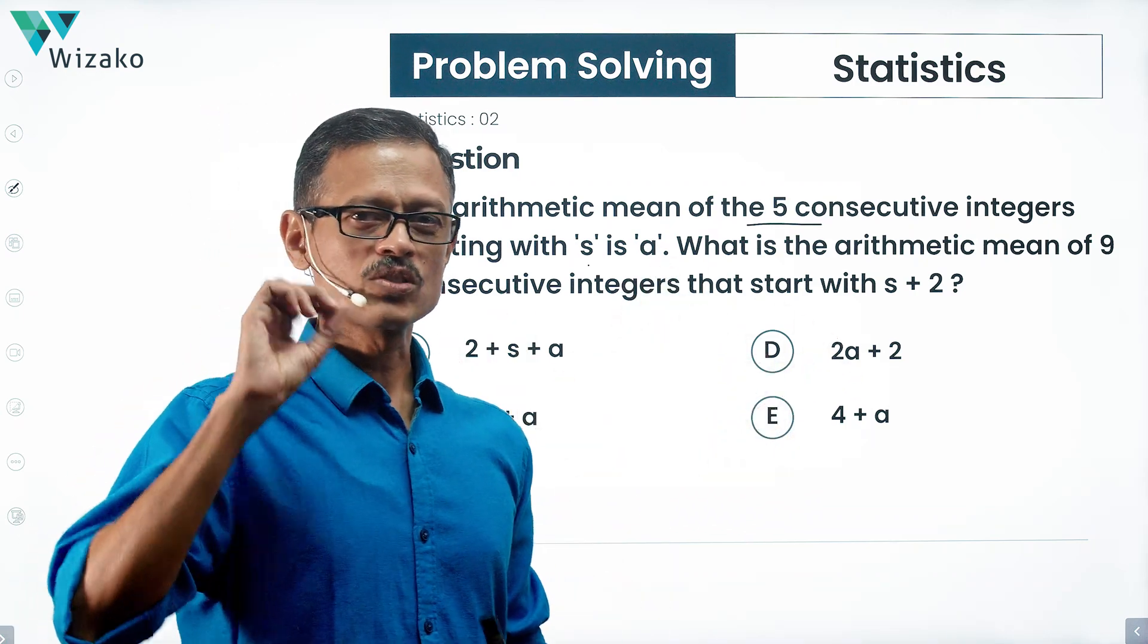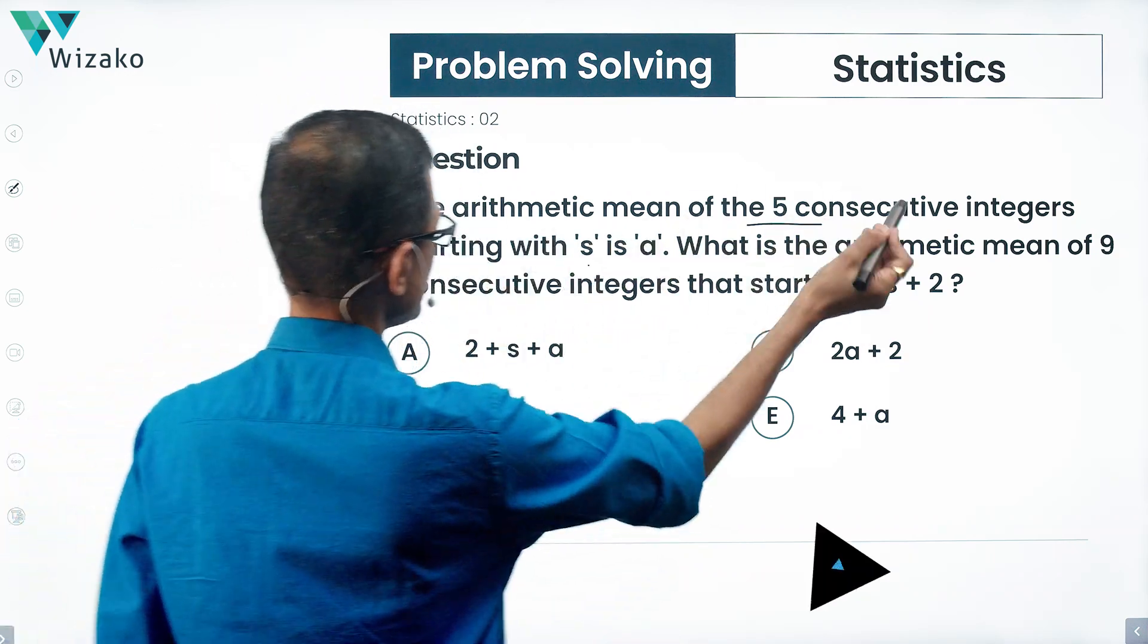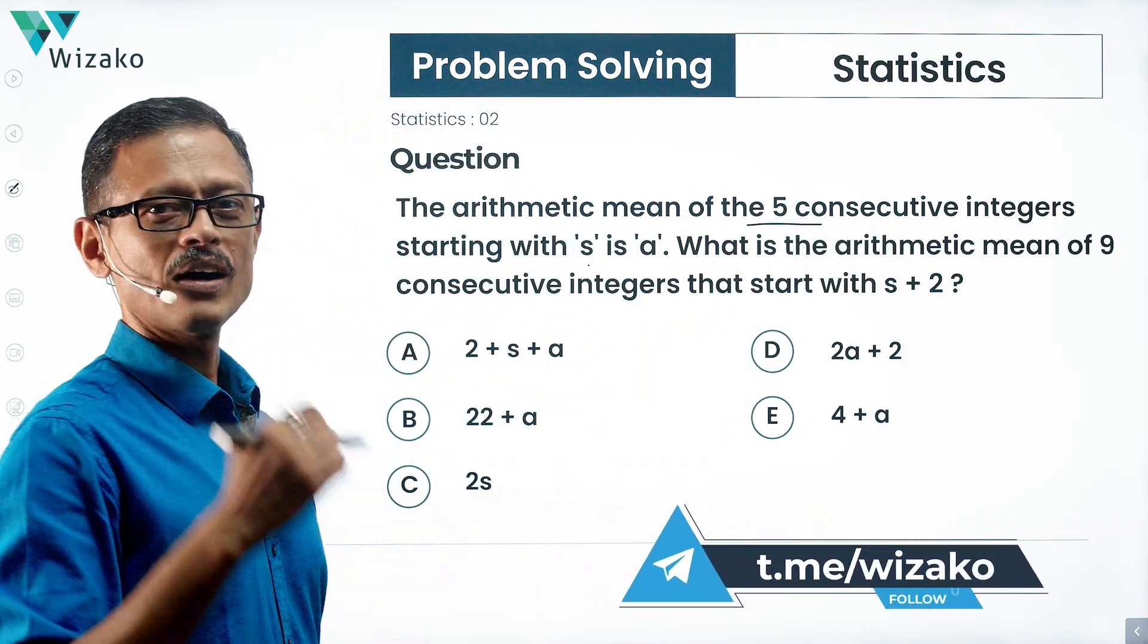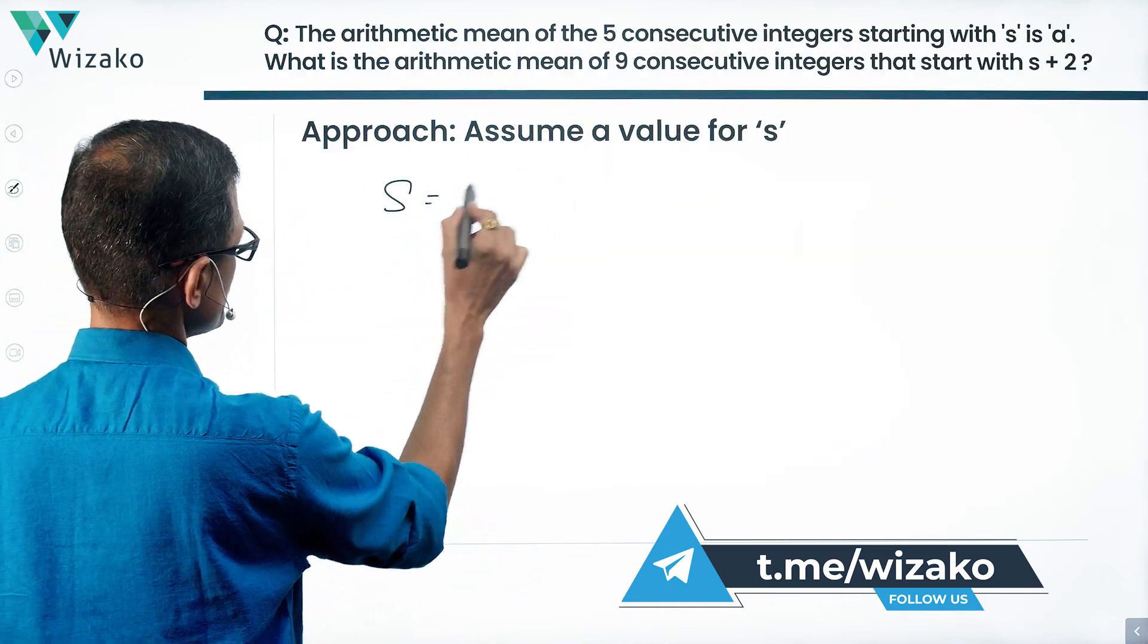The quickest way to solve this question is by assuming a value for one of these variables. We're starting with 5 consecutive integers with S, so assume a value for S. The quickest and easiest value to assume is S equals 1.